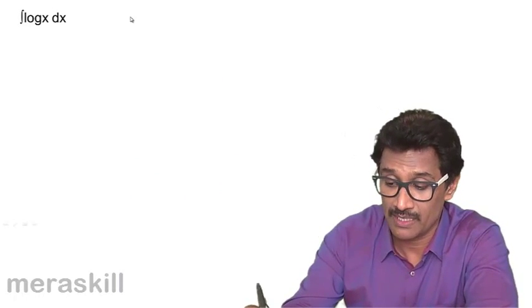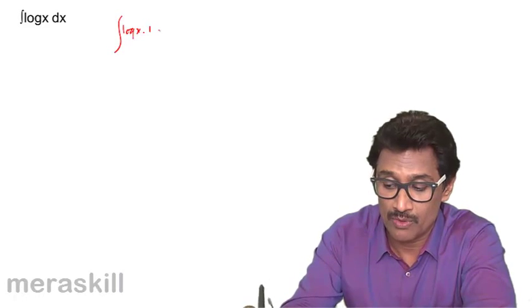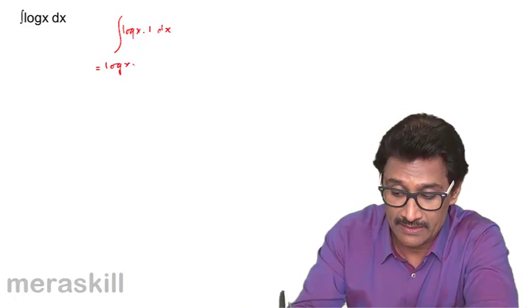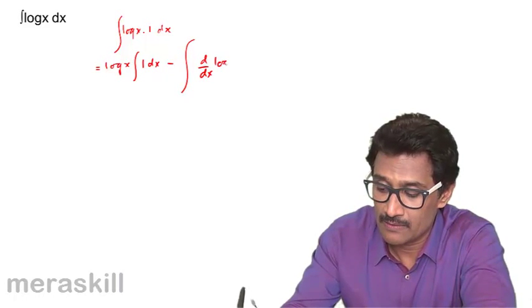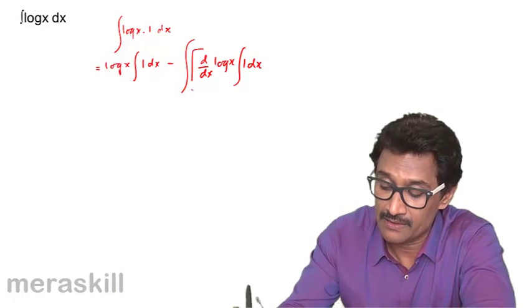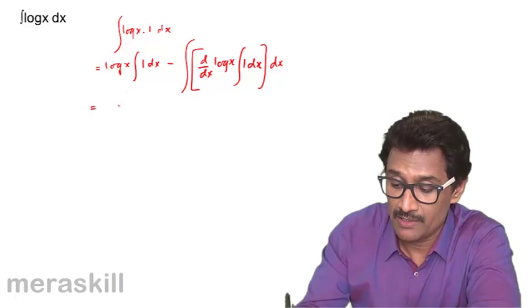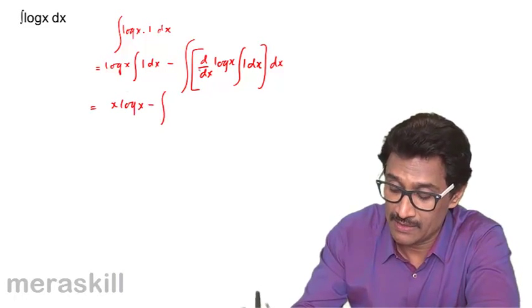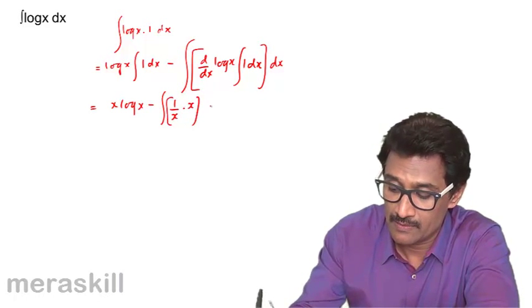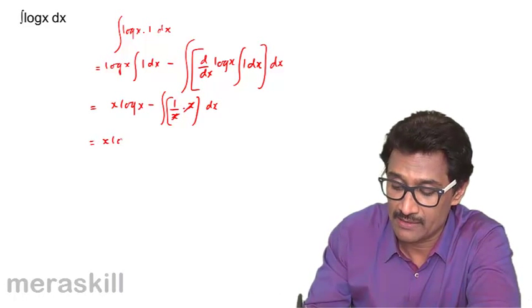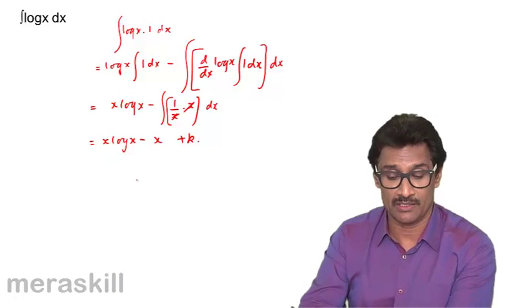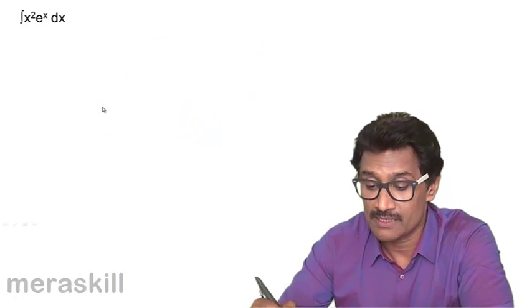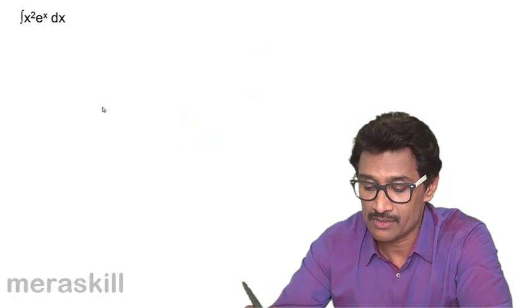For ∫log(x) dx, we write it as ∫log(x)·1 dx, taking log(x) as u. So it becomes x·log(x) minus ∫(1/x)·x dx, the x's cancel, giving x·log(x) minus x plus k. So the integral of log(x) is x·log(x) minus x plus k, as derived earlier.